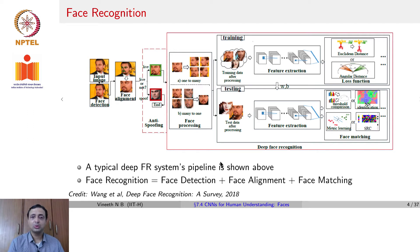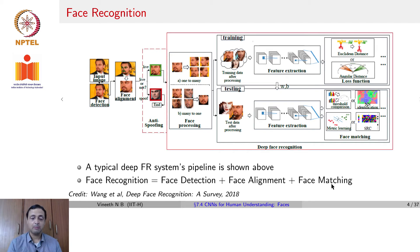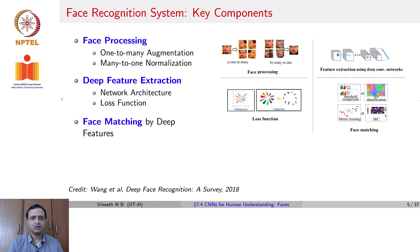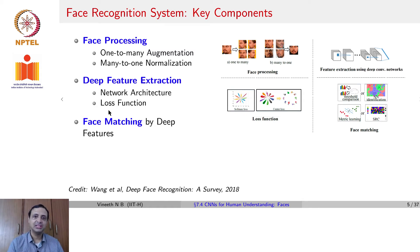Broadly speaking, to deploy face recognition systems in the wild, it is a combination of detection, alignment, and matching. Matching can be of several kinds when we talk about faces. The key components are face processing — where you could have a one-to-many augmentation or a many-to-one normalization — then deep feature extraction through a network architecture with a corresponding loss function, and finally matching these embeddings or features using various different approaches.